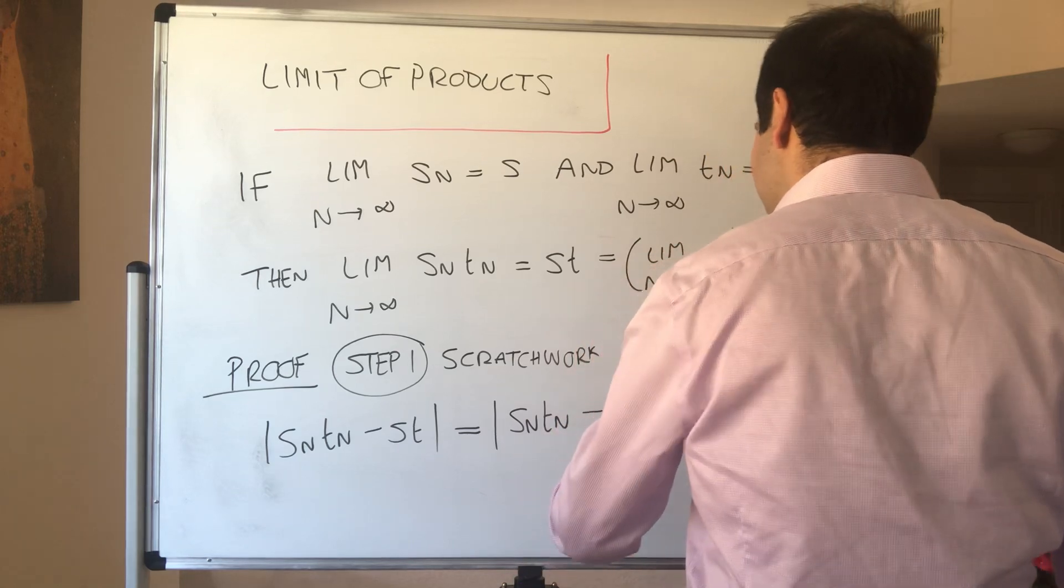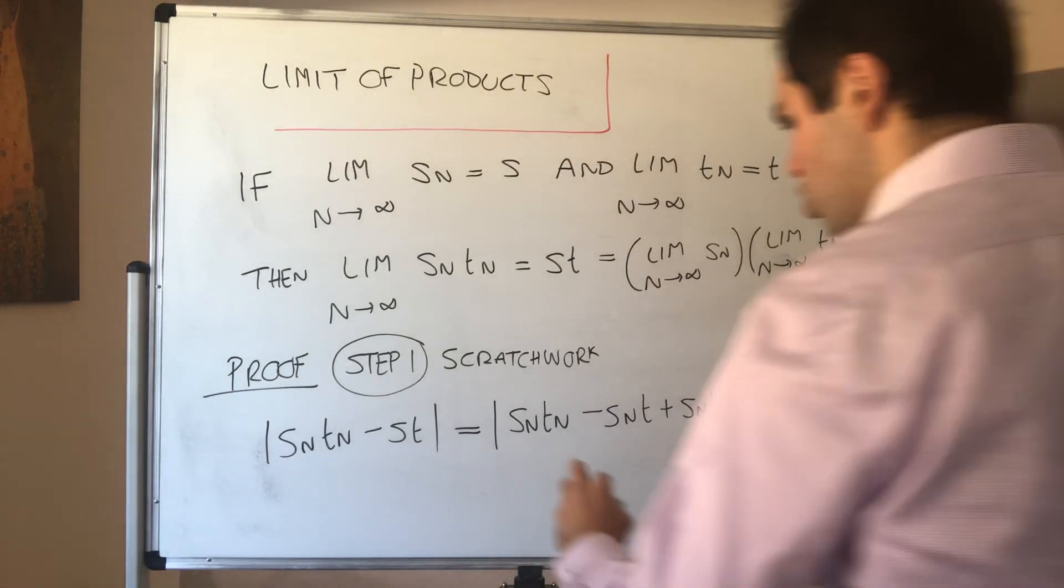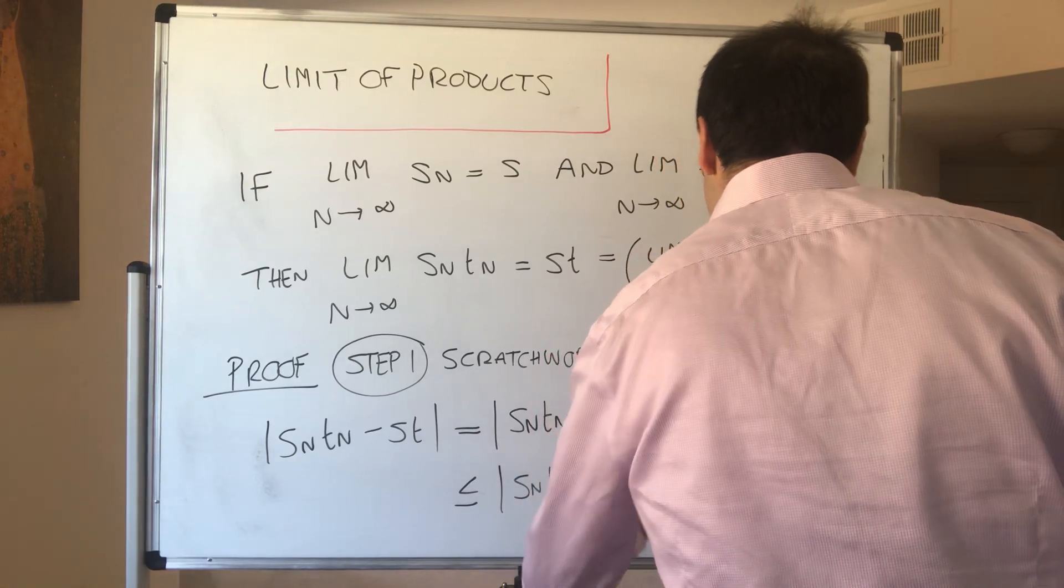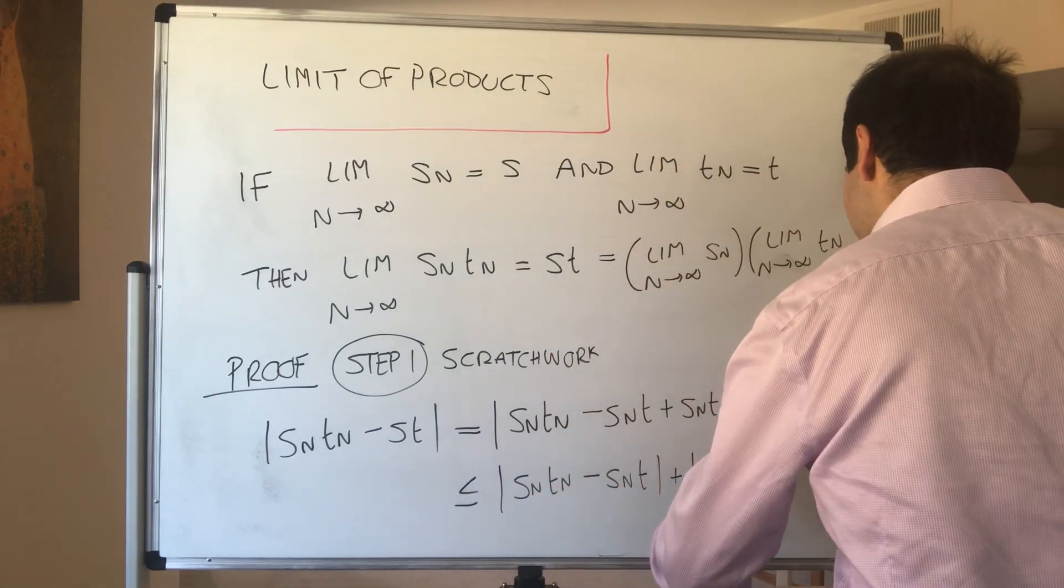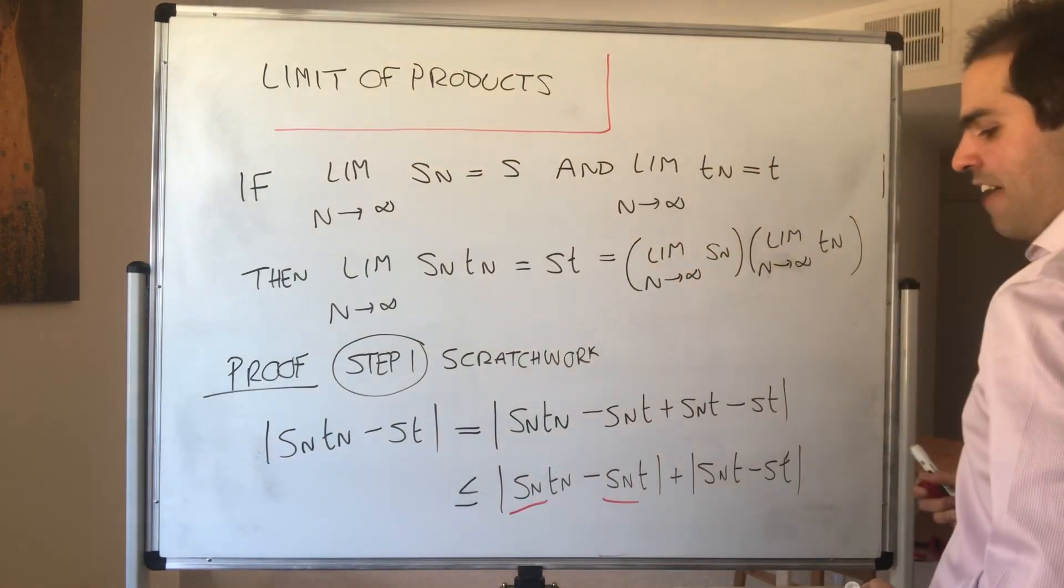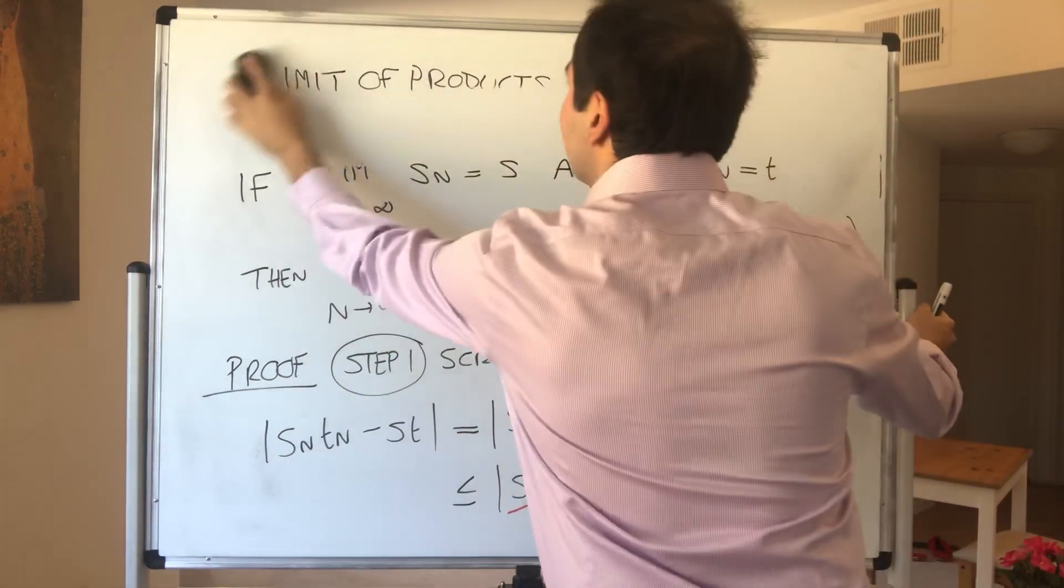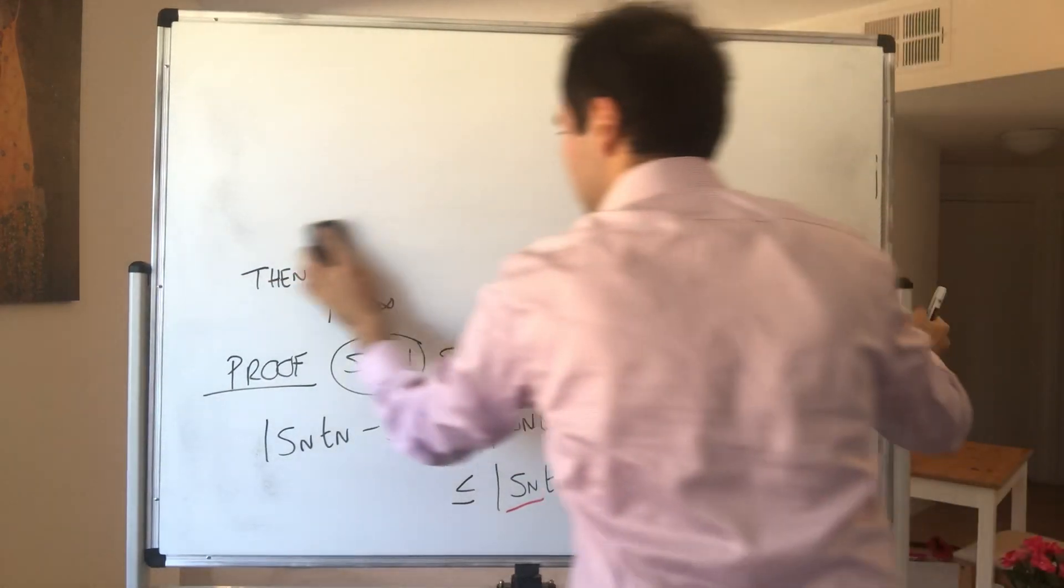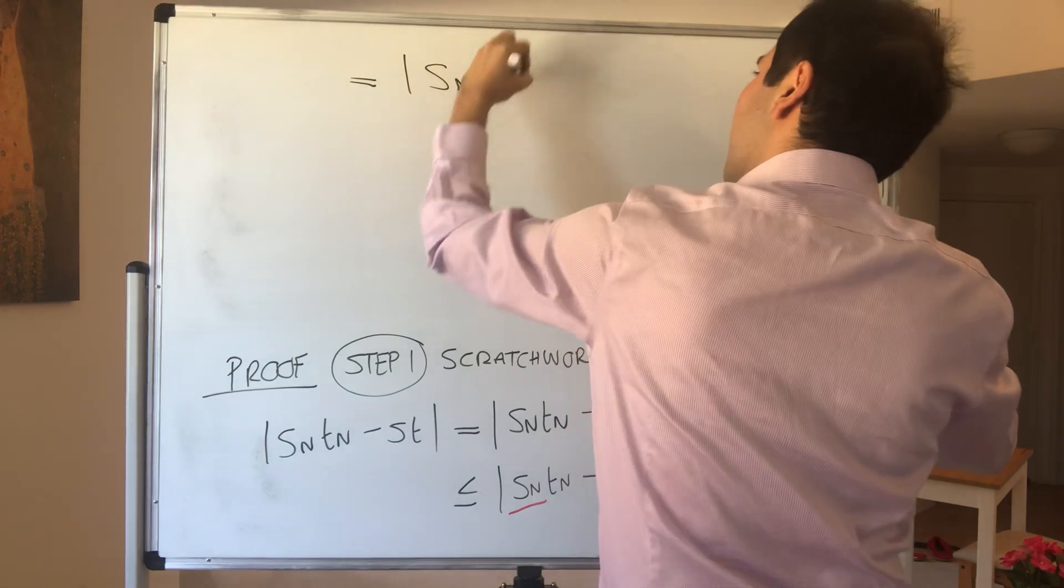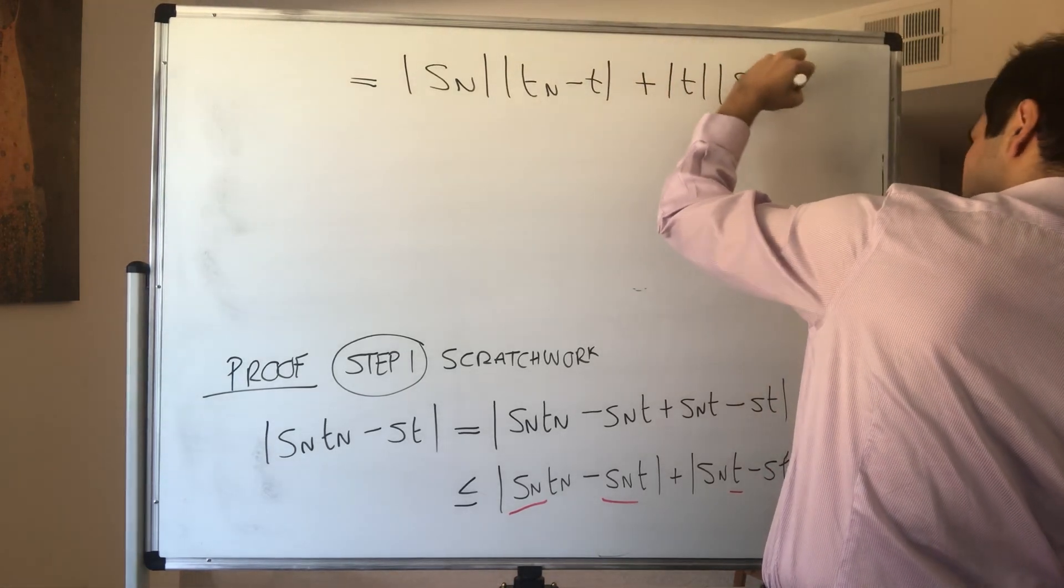So minus Sn T plus Sn T and then minus St. This becomes absolute value of Sn Tn minus Sn T plus Sn T minus St. Notice what's nice here is that we have a common factor of Sn and here we have a common factor of T, so we can just pull it out. Therefore this becomes absolute value of Sn times absolute value of Tn minus T plus absolute value of T times absolute value of Sn minus S.